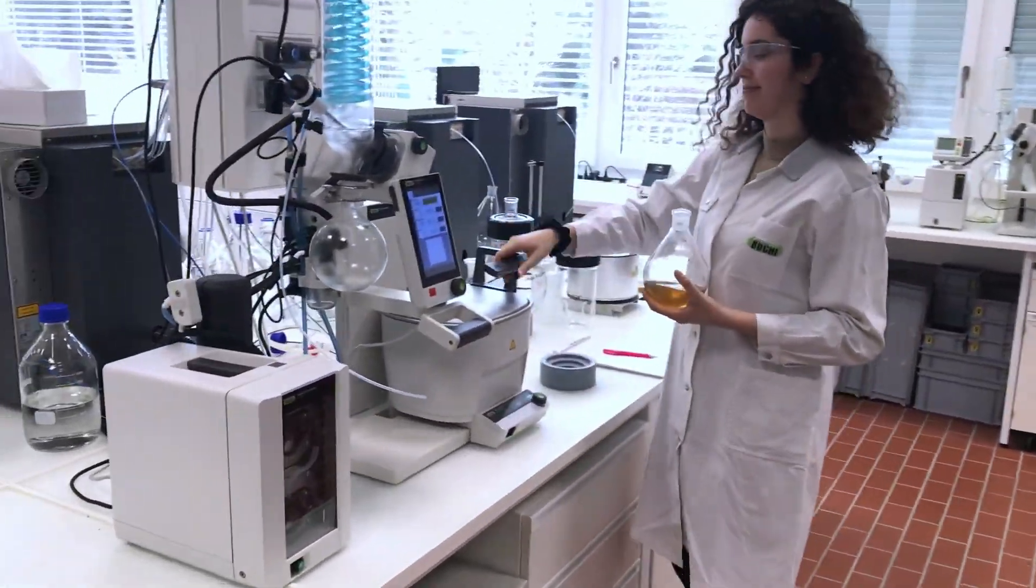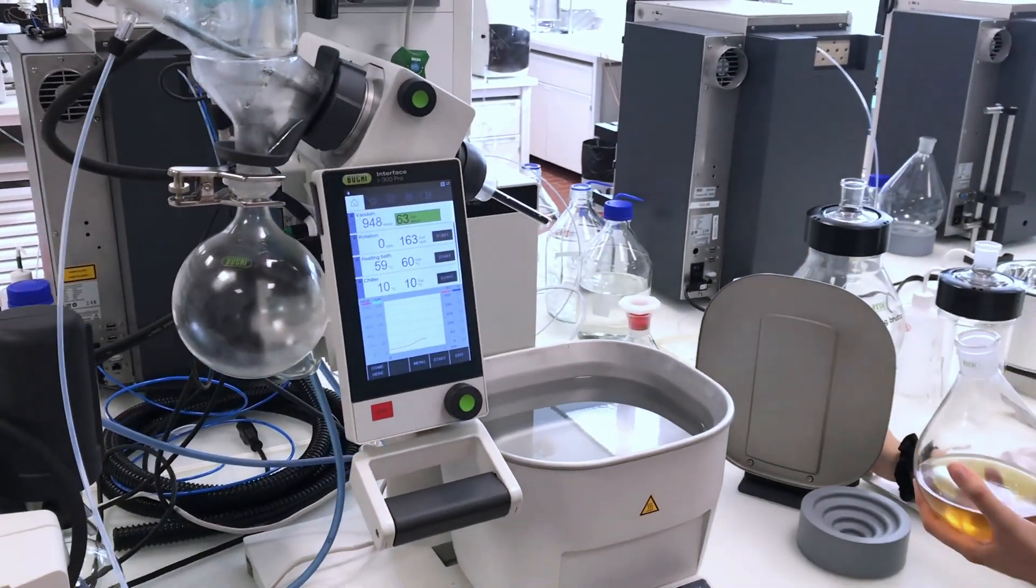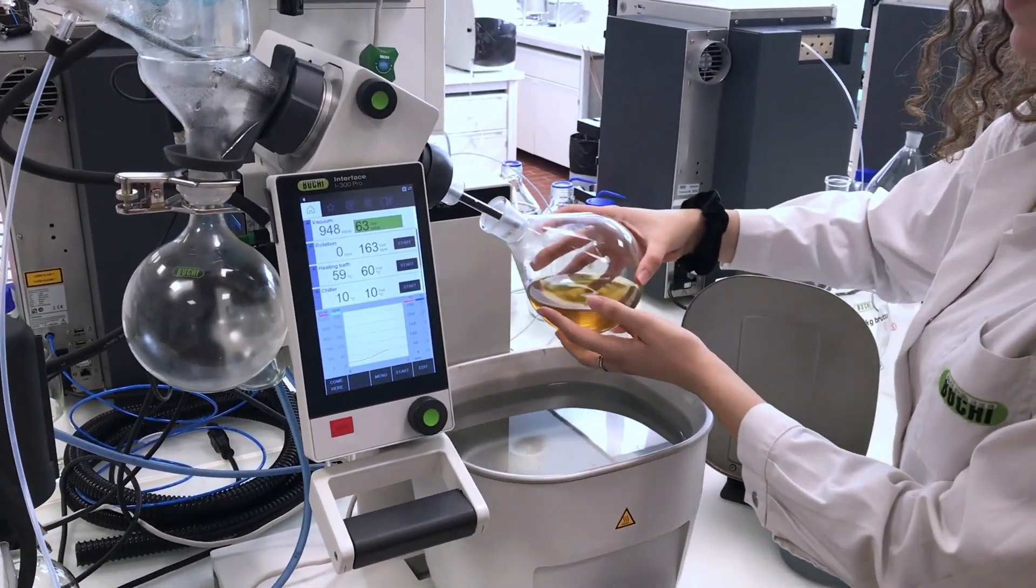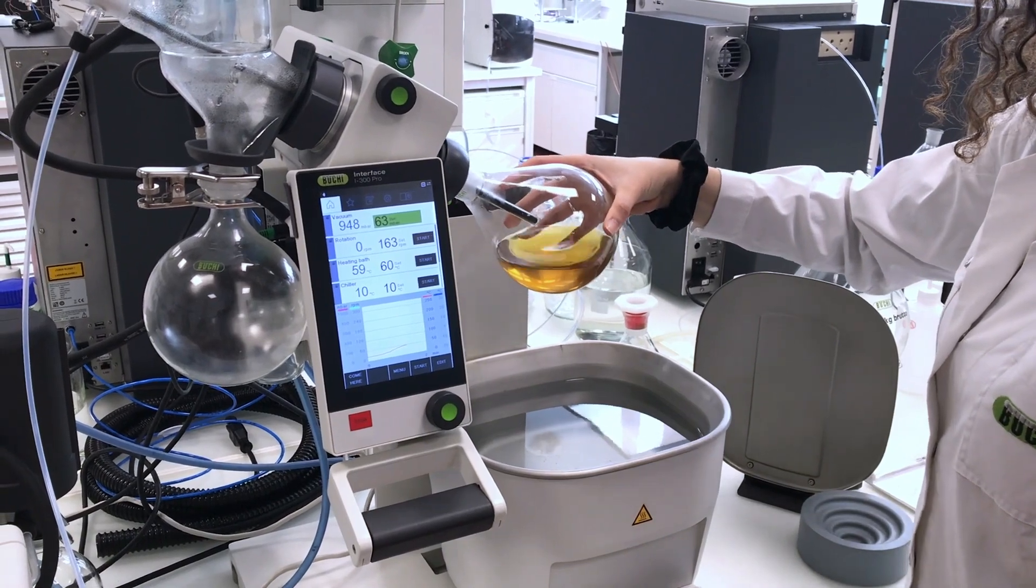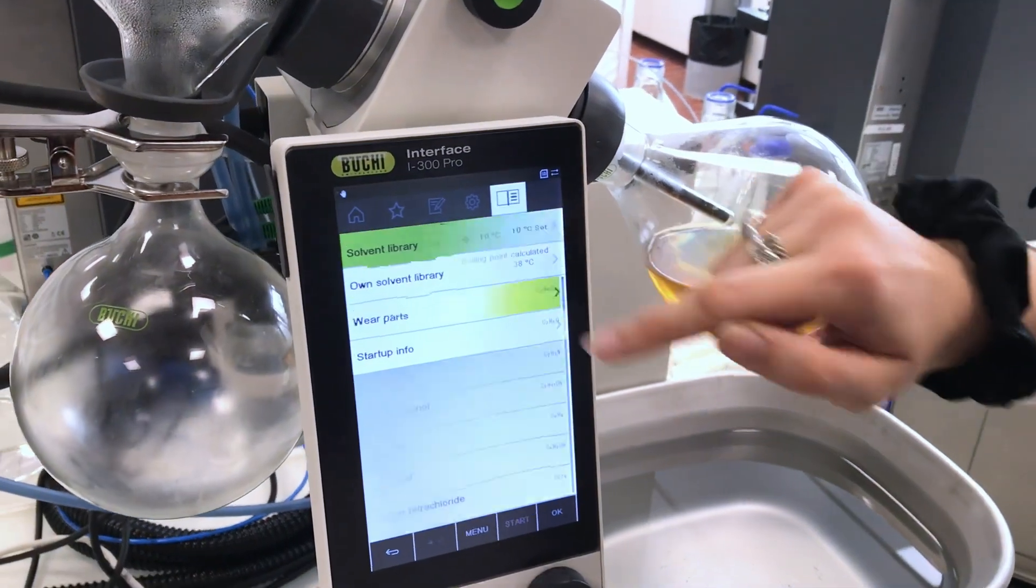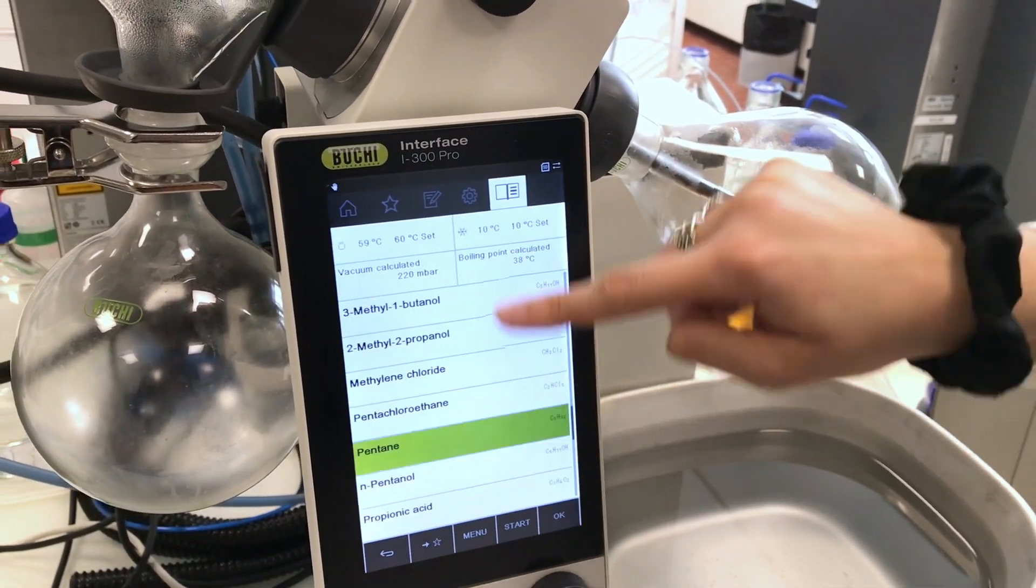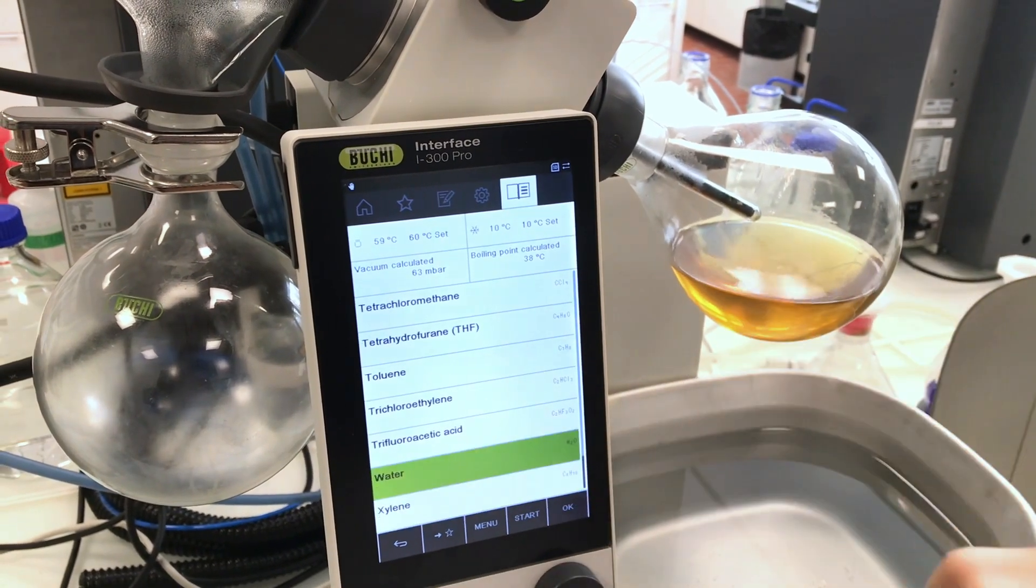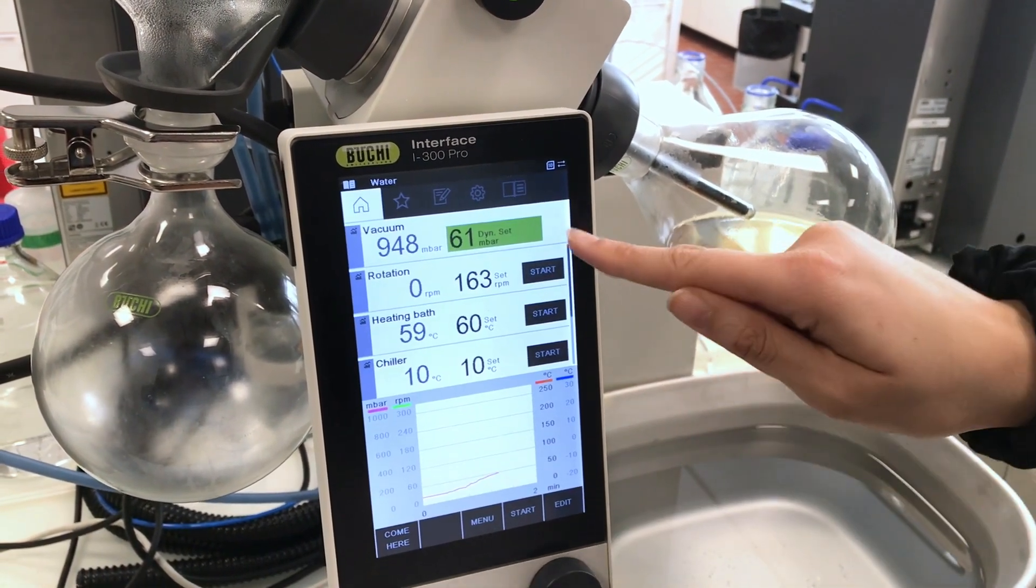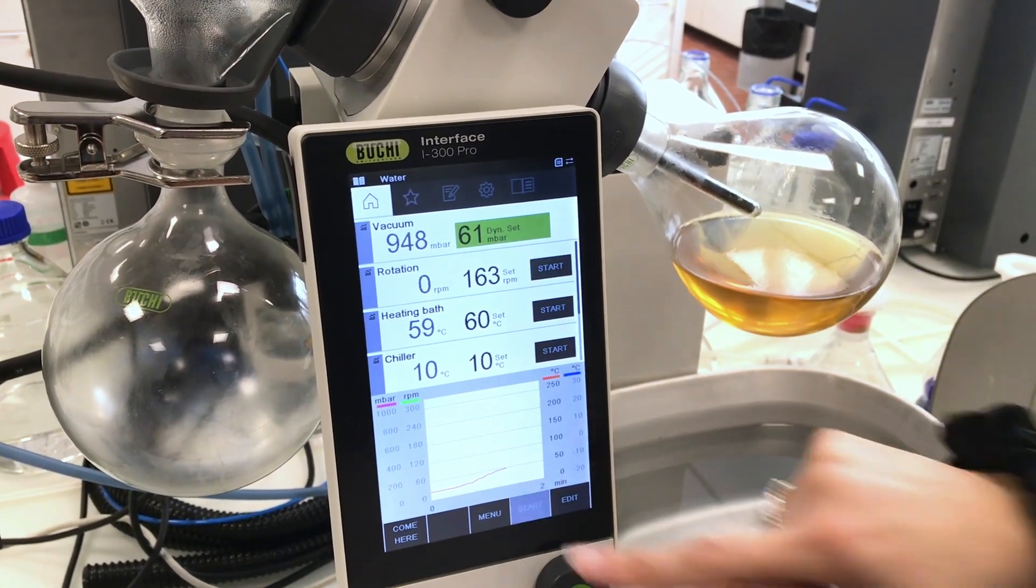So I'm taking the lid out of the bath - this helps to prevent water evaporating. I'm putting my flask there, as you can see it's quite easy handling, and I go to the solvent library. I choose water because that is the solvent that I have in my evaporating flask, and because the interface is connected to all the systems, the set pressure is connected to the heating bath temperature and the chiller's temperature.